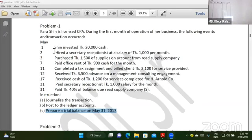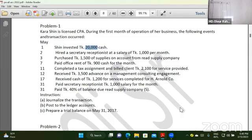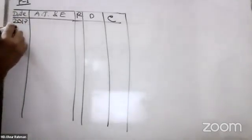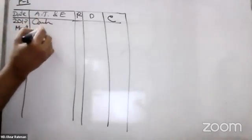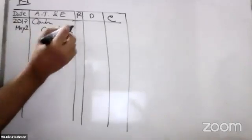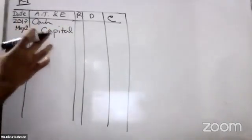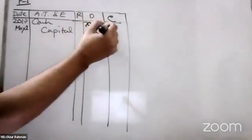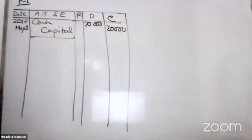I'm going to tell you how to do this. We invest 20,000 cash. The owner is Debit — Cash Debit, Capital Credit. So we have Cash Debit and Capital Credit.